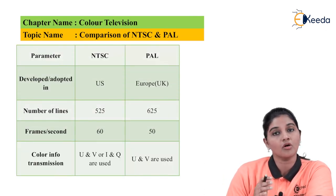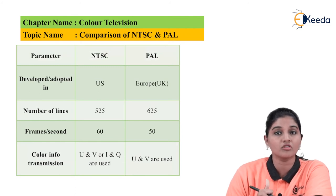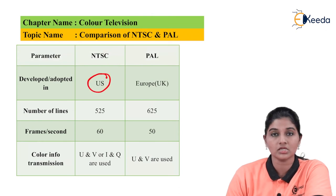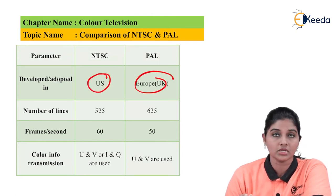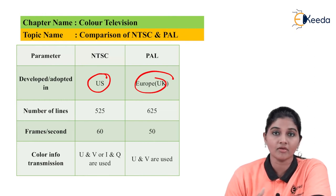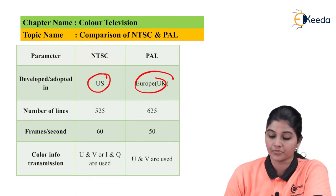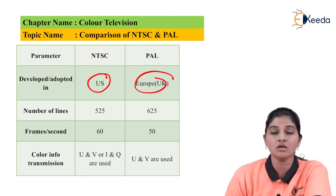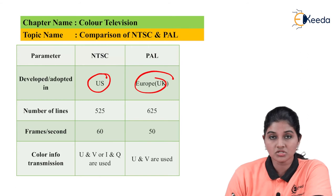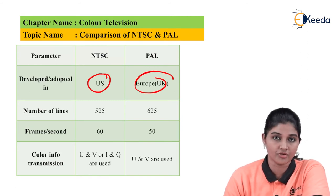Now we are going to compare on the basis of certain parameters. The first parameter is the originating country: NTSC is developed in the US and PAL is developed in the UK, that is Europe. The number of lines required for scanning is 525 for NTSC and 625 for PAL. The number of frames per second is 60 for NTSC and 50 for PAL.